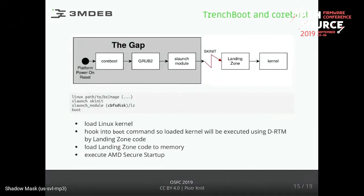Our implementation, compared to the TCG specification diagram, looks like this: we have platform reset, then coreboot, then GRUB as a payload - everything in SPI. In GRUB we have the SLaunch module, which is an extension to GRUB. We invoke the SKINIT instruction. We have our secure loader called Landing Zone in TrenchBoot. It can run and measure the Linux kernel, which I will present in a moment.